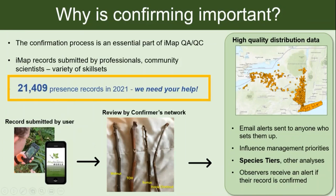To show you how much data comes in: we got over 20,000 presence records last year, which is amazing. We do have a lot of confirmers helping us try to keep up with those, but we always need more help. We're happy to have about 40 people here today who can help review data in iMapInvasives and keep the database accurate and current.